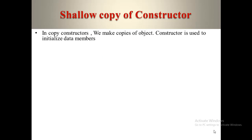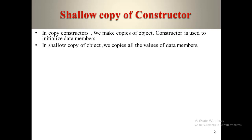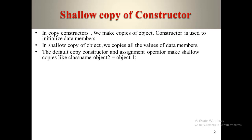So what is Shallow Copy? In Copy Constructor we make copies of objects. Constructor is used to initialize data members. As we have discussed earlier, every object has a copy of all the data members and member functions. So when we create the copy of an object, it also creates the copy of all the data members and member functions for that copy object. In Shallow Copy, we copy all the values of data members one by one. The default copy constructor and assignment operator make Shallow copies.